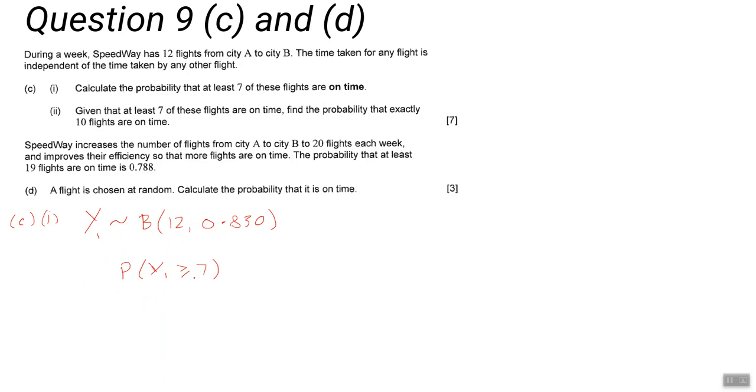And part two, they're really throwing the probability stuff at you here. Even though at least seven of these flights are on time, find the probability that exactly ten flights are on time. So we've got A and B and we want the probability of A given B. So this is a conditional probability question. So it's worth writing down the events: A is Y1 equals ten, that's exactly ten flights are on time.